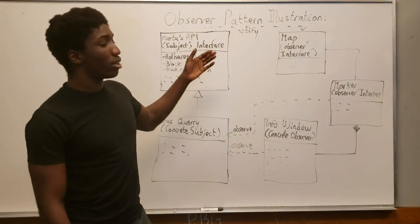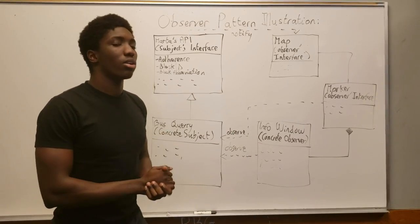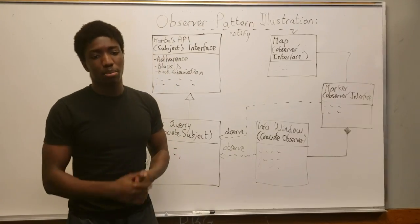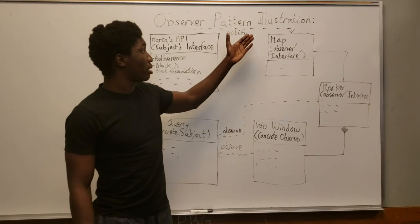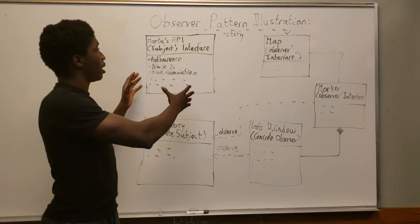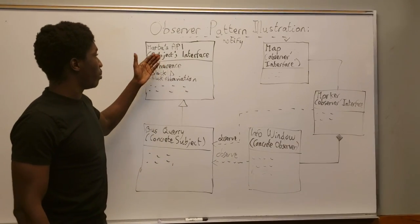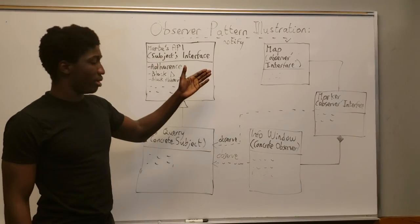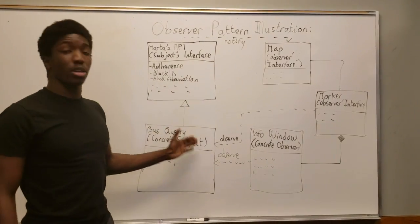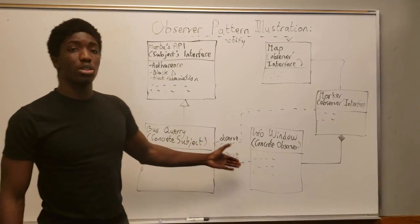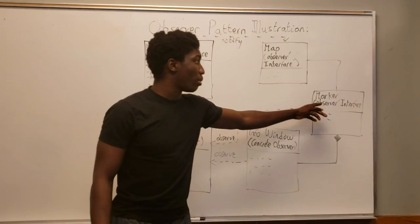I'm gonna go over our design pattern, the cohesion and coupling of our class diagram. So our class diagram actually has high coupling and high cohesion. We opted for an observer pattern because all our data actually originates from the MARTA API, which is the main subject interface. The bus query then is created from that and it's the concrete subject that is observed by the info window and the marker observer.